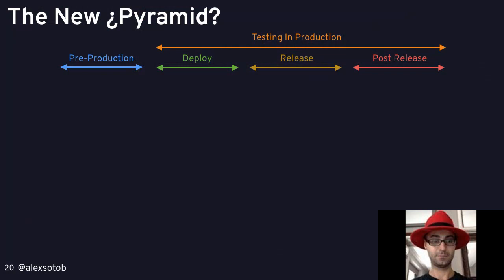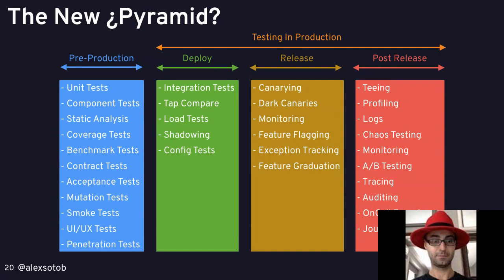The testing environment has changed. We now have a pre-production column — all the tests run by developers for every pull request: unit tests, component tests, contract tests, acceptance tests, smoke tests, and so on. Then there are three production columns divided into three stages. The first is the deploy stage, where you run integration tests against the production environment.